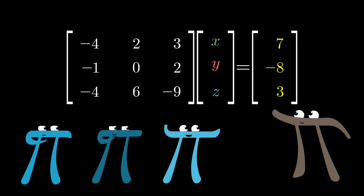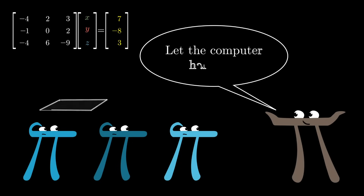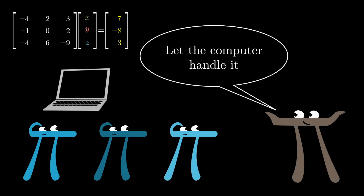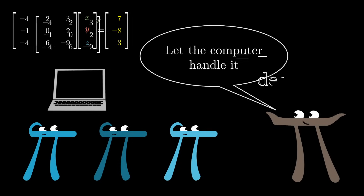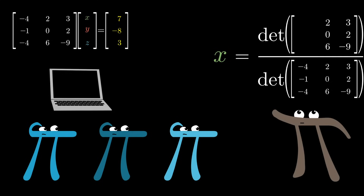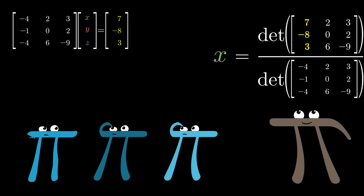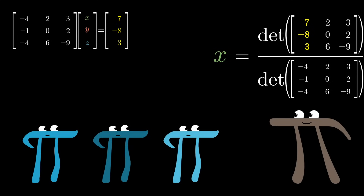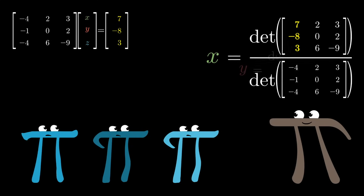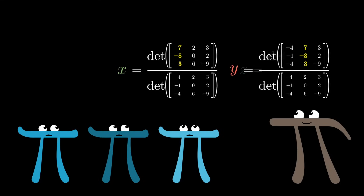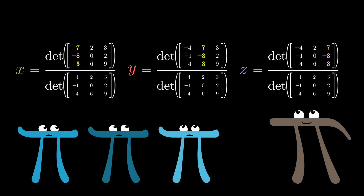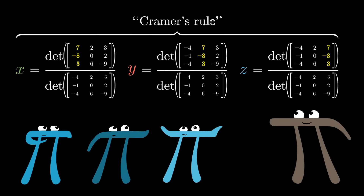In a previous video I talked about linear systems of equations, and I sort of brushed aside the discussion of actually computing solutions to these systems. While it's true that the number crunching is typically something we leave to the computers, digging into some of these computational methods is a good litmus test for whether or not you actually understand what's going on — since that's really where the rubber meets the road. Here I want to describe the geometry behind a method for computing solutions to these systems, known as Cramer's rule.